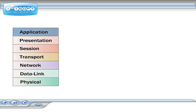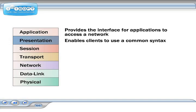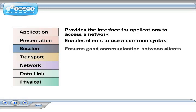At the application layer, network access is provided to applications, such as the ability of your word processor to load files from a server or to send a document to a print device. At the presentation layer, the client computers that are communicating with each other choose the best syntax that they have in common. At the session layer, protocols maintain the connection between the communicating clients.